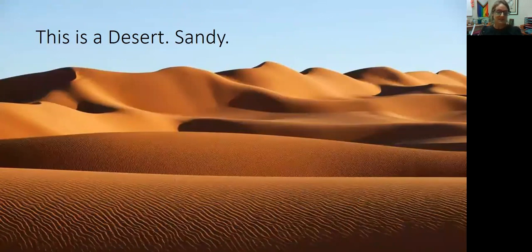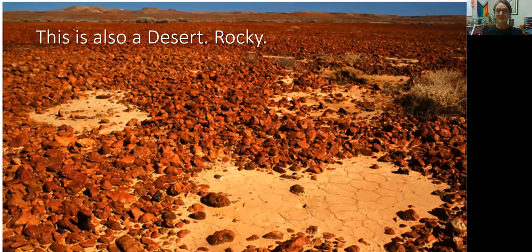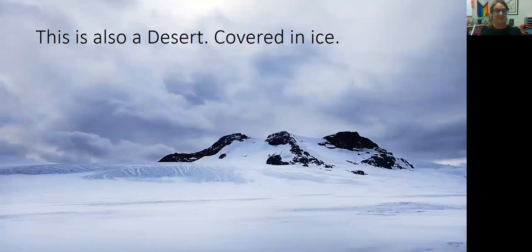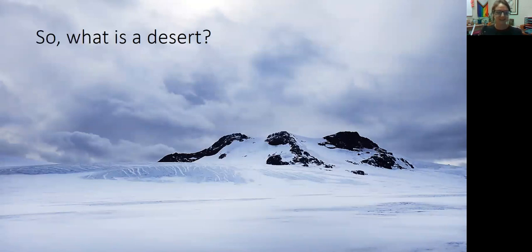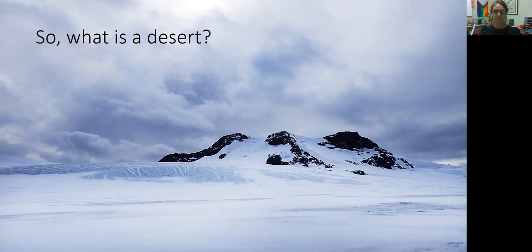So this is a desert — this is a sandy desert. This is also a desert; this desert happens to be rocky. This is also a desert; this desert is covered in ice. So what is a desert? How can a desert be sandy, rocky, or icy?